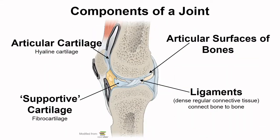All joints will have a few structures in common. The smooth articular surfaces of the bones are often covered in articular cartilage, and remember this is hyaline cartilage. Ligaments help keep the bones articulated and together, as well as potentially limit the freedom of movement at that joint — you can see these are connecting bone to bone. Some joints also have fibrocartilage structures, like those found in the knee, which help create a better fit between the two bones.